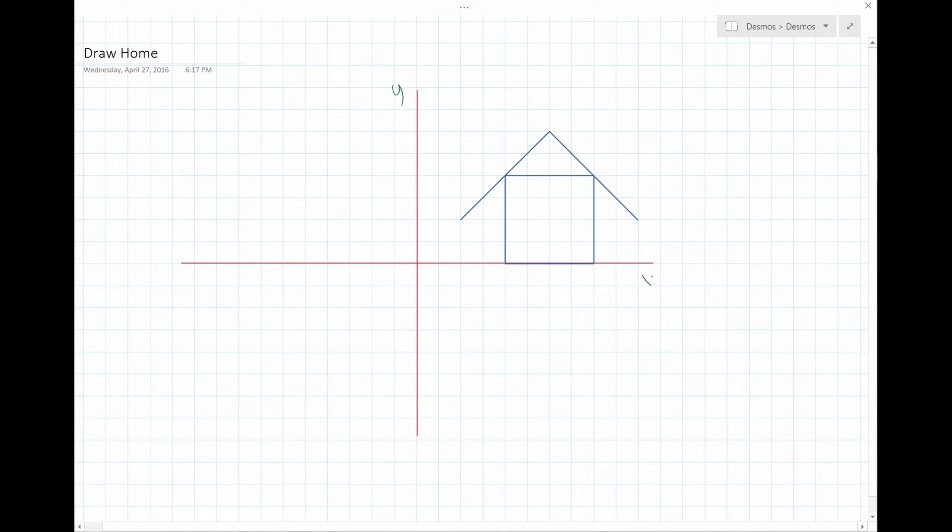This is Y. This one's X. And over here is the origin, 0, 0, right? And so this is 1, 2, 3, 4, 5, 6, 7, 8, 9, 10. Okay.